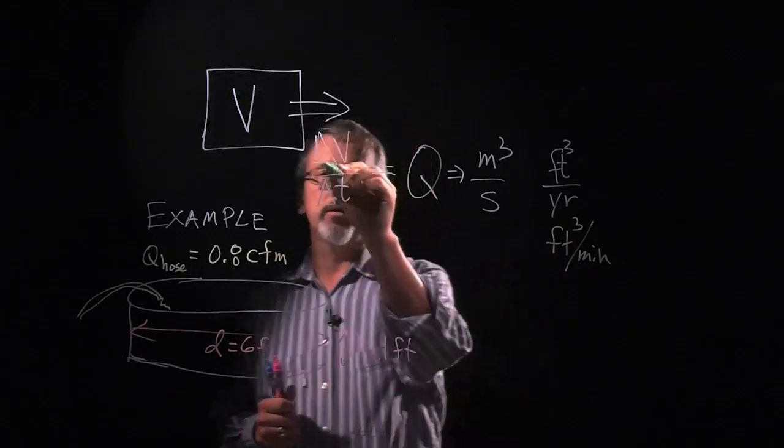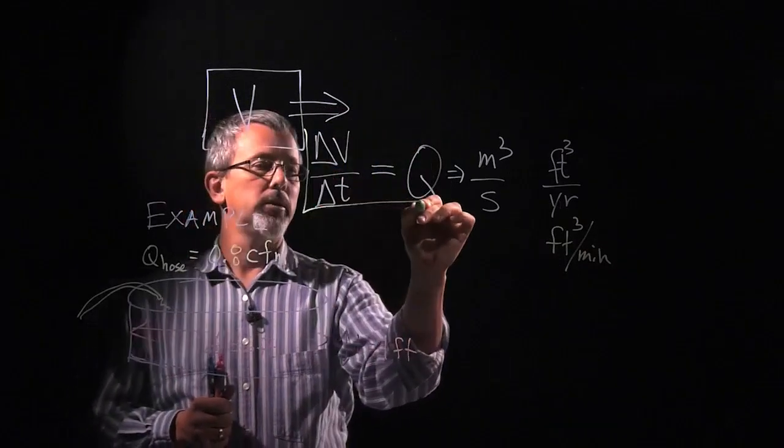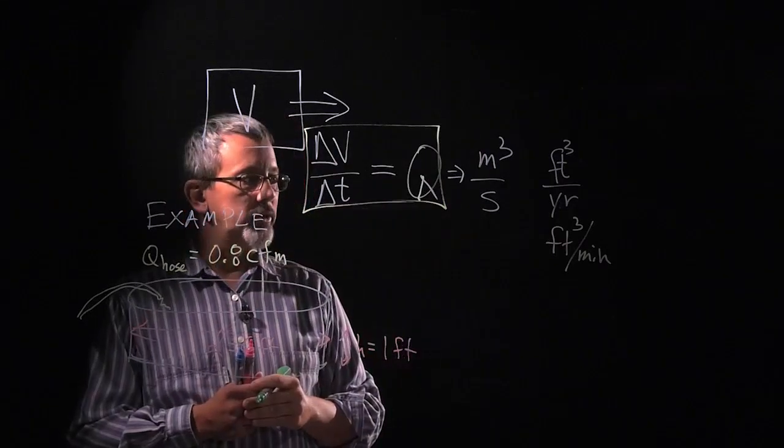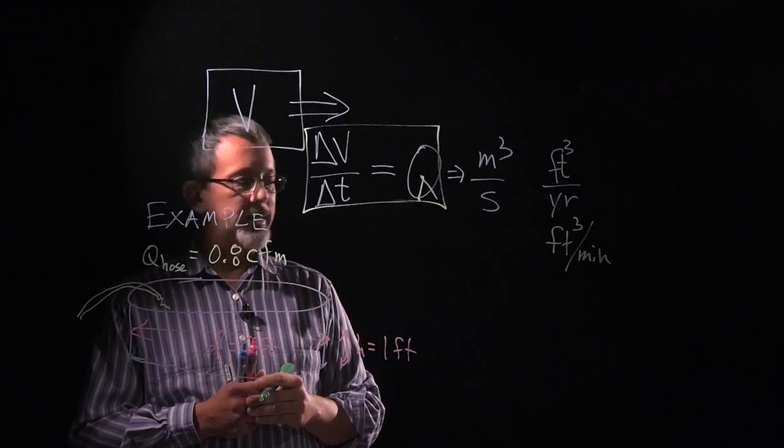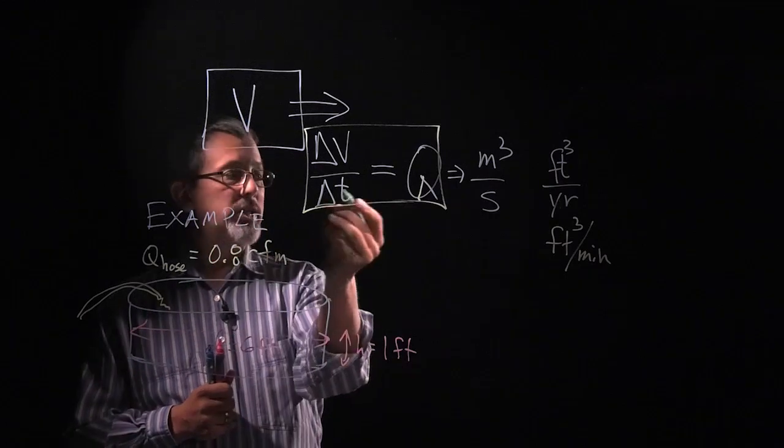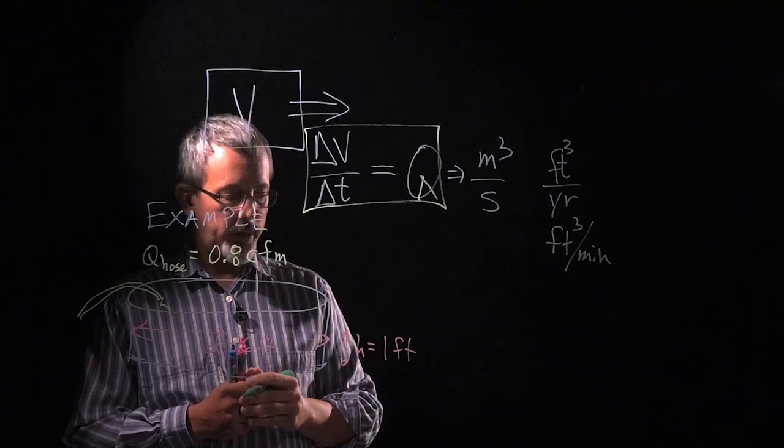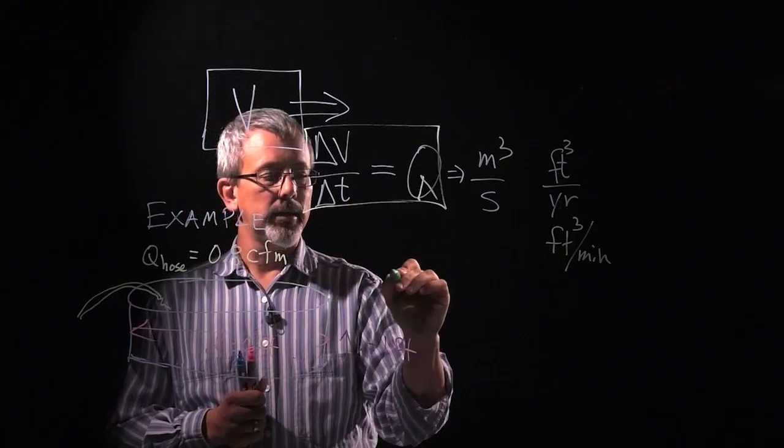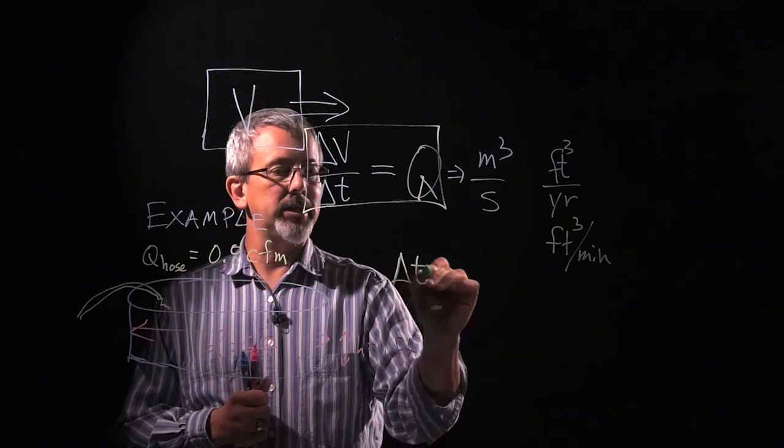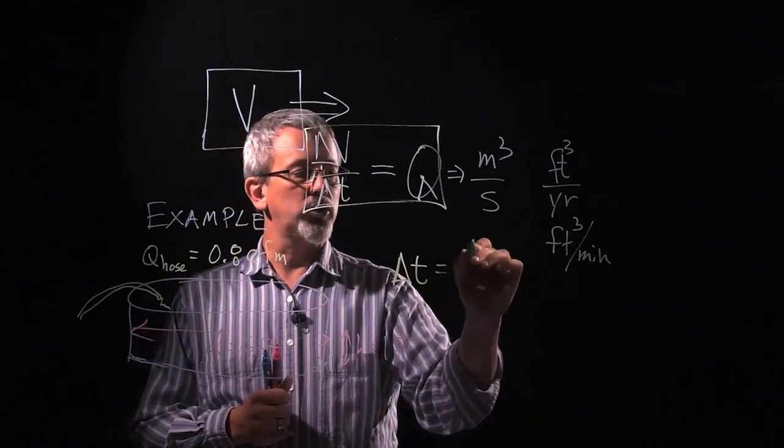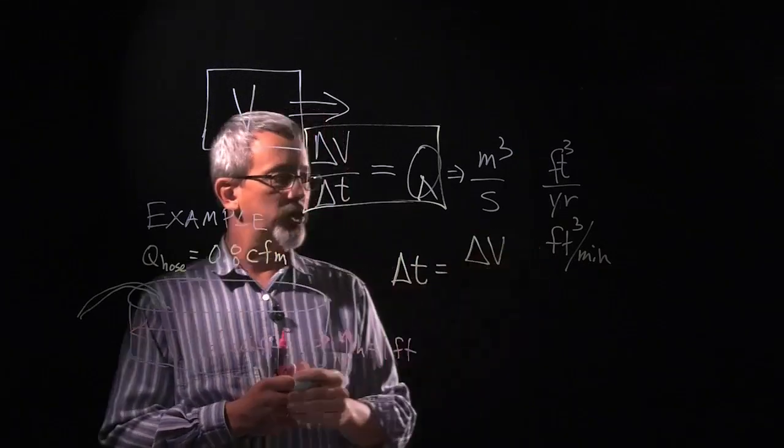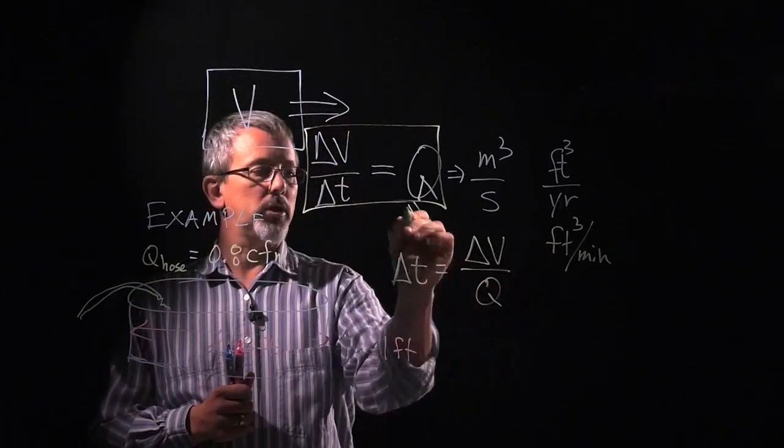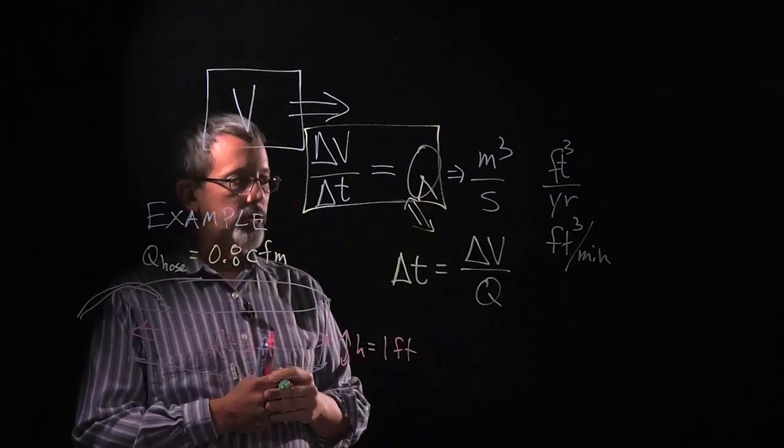So let's look at our relationship here. We have our relationship, sort of written backwards here, of Q equals delta V over delta T. Let's reorganize that relationship a little bit. I want to know how much time it takes to do something. So if I reorganize that, I end up finding out that the amount of time it takes to do something is equal to the amount of the change in our volume divided by the flow. Notice these are same relationships algebraically.